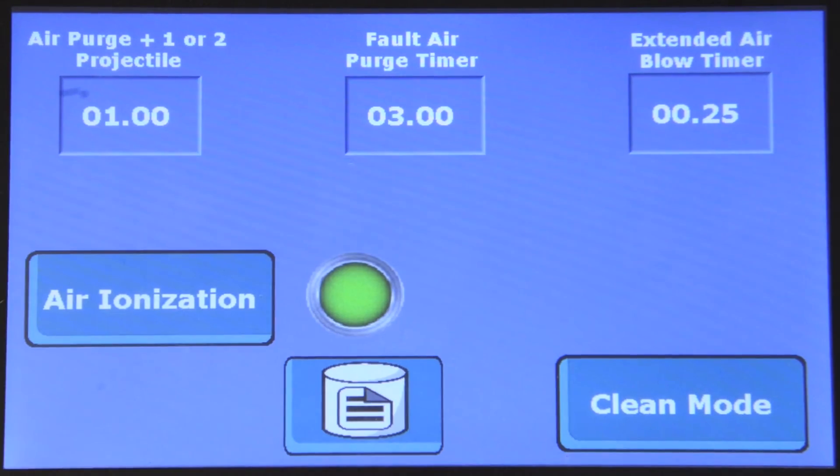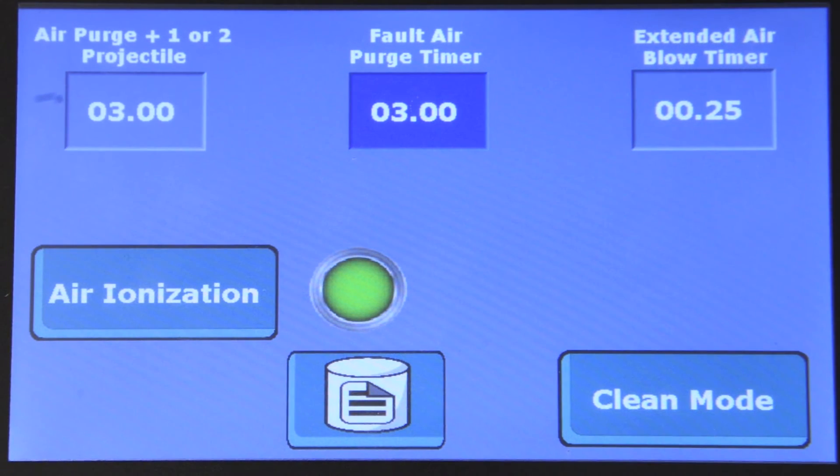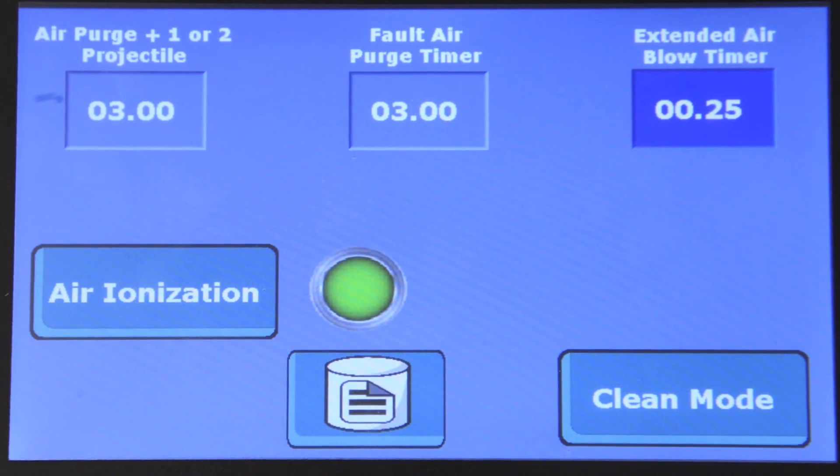The gear graphic is for system settings. There are three air purge timers that can be set by the operator in the settings menu: air purge plus one or two projectile cleaning mode, fault air purge, and extended air purge after verification.